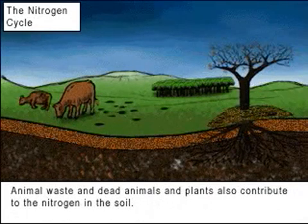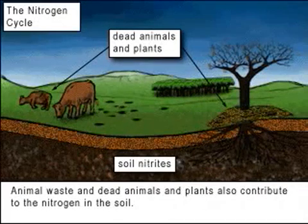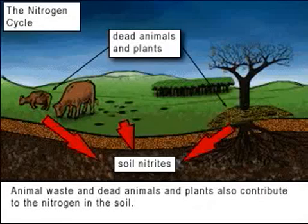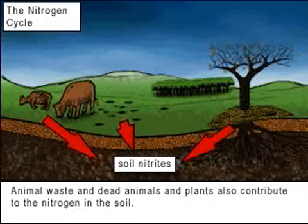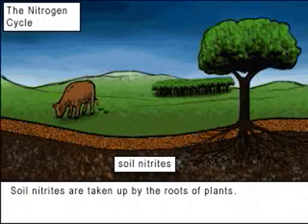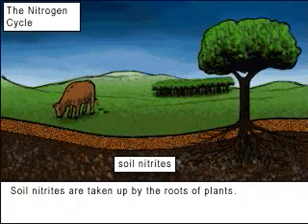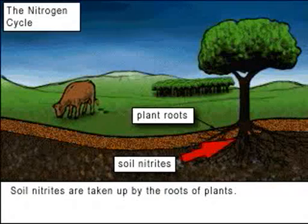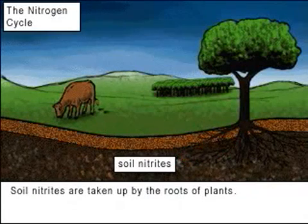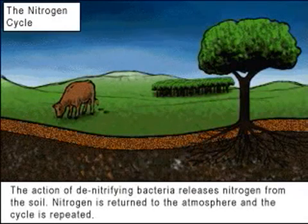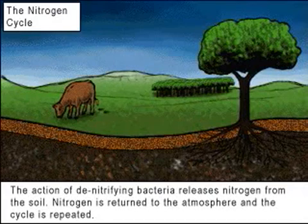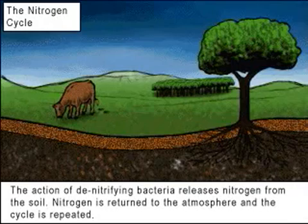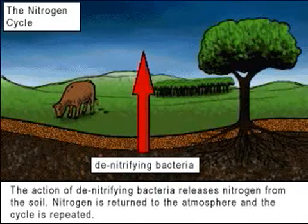Animal waste and dead animals and plants also contribute to the nitrogen in the soil. Soil nitrites are taken up by the roots of plants. The action of denitrifying bacteria releases nitrogen from the soil, returning it to the atmosphere so the cycle is repeated.